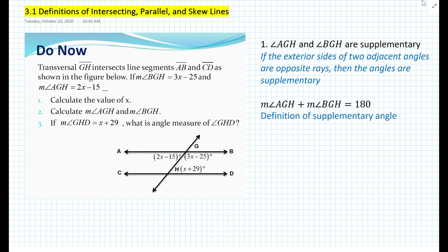We can substitute in terms of x: 2x minus 15 plus 3x minus 25 equals 180 by the substitution postulate. Solving this, we obtain x equal to 44.